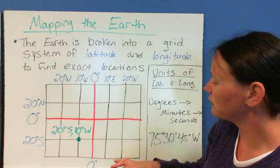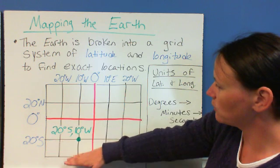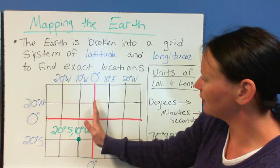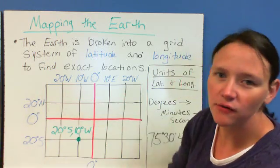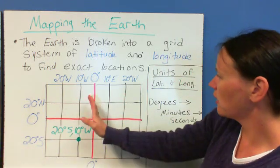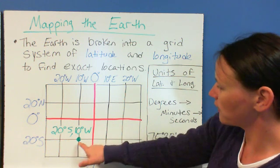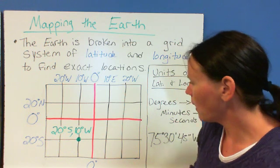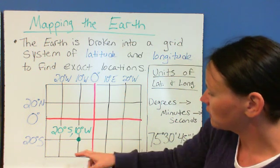To read this, everything below the equator is south. Everything above it is north. Everything to the left of zero degrees longitude is west. Everything this way is east. So, if we've got this point right here, it says it's 20 degrees south and 10 degrees west. Well, let's look at that.